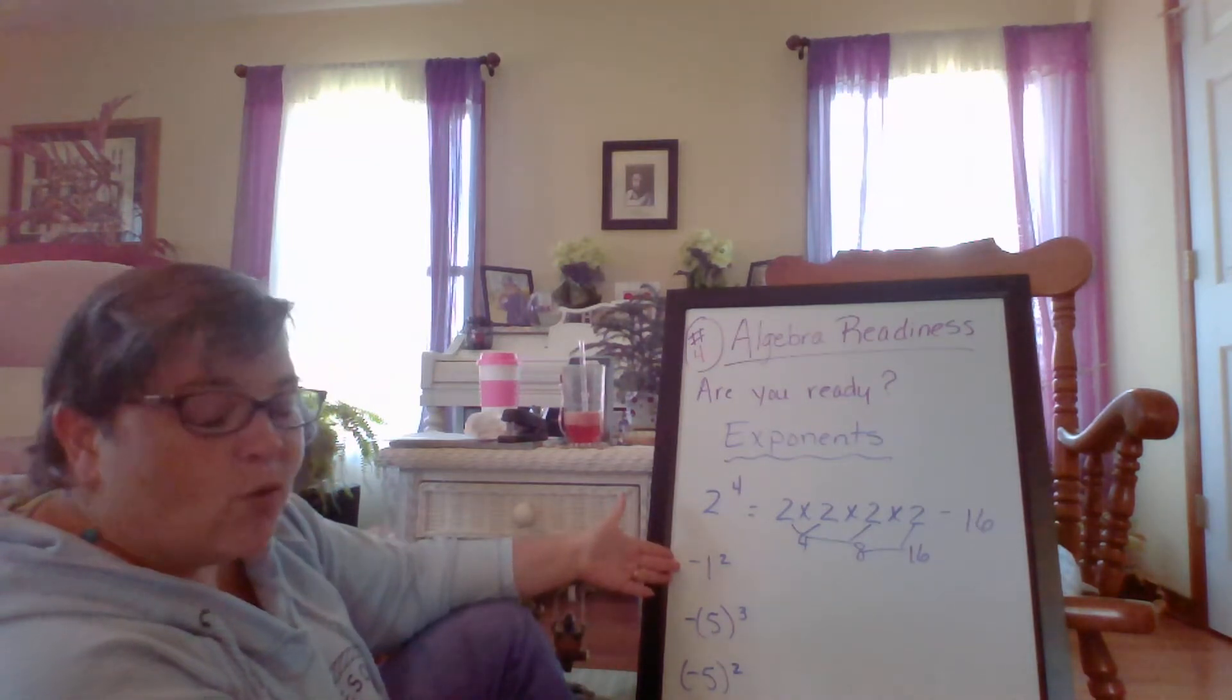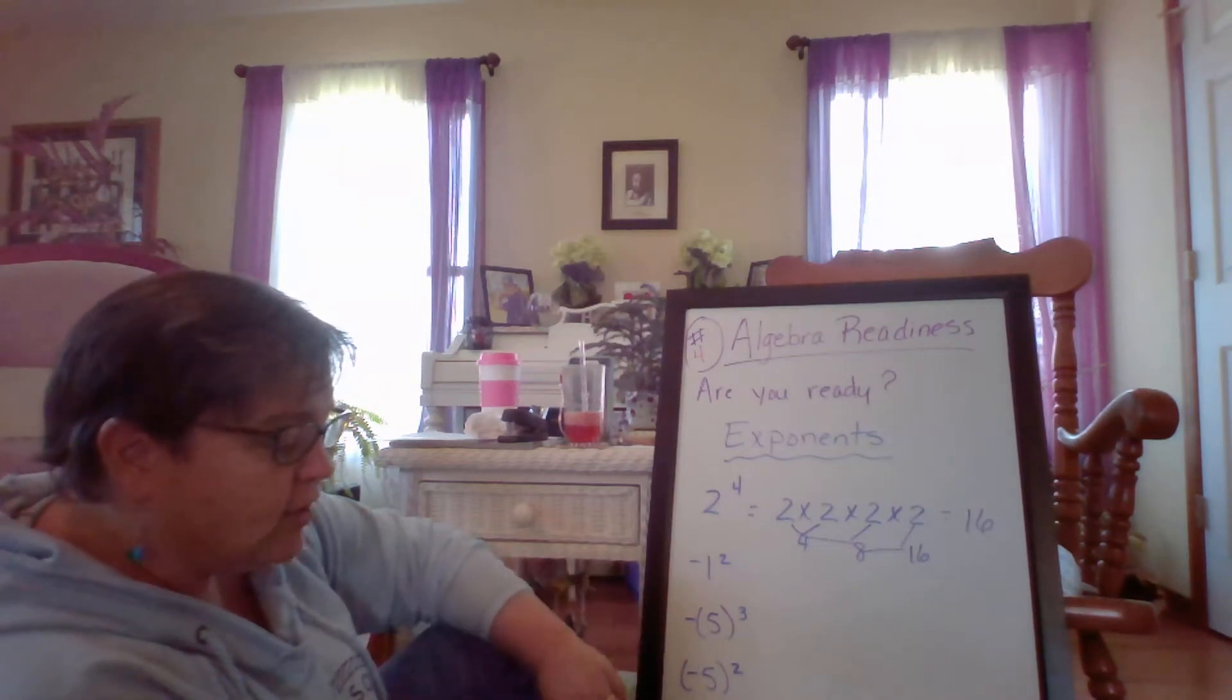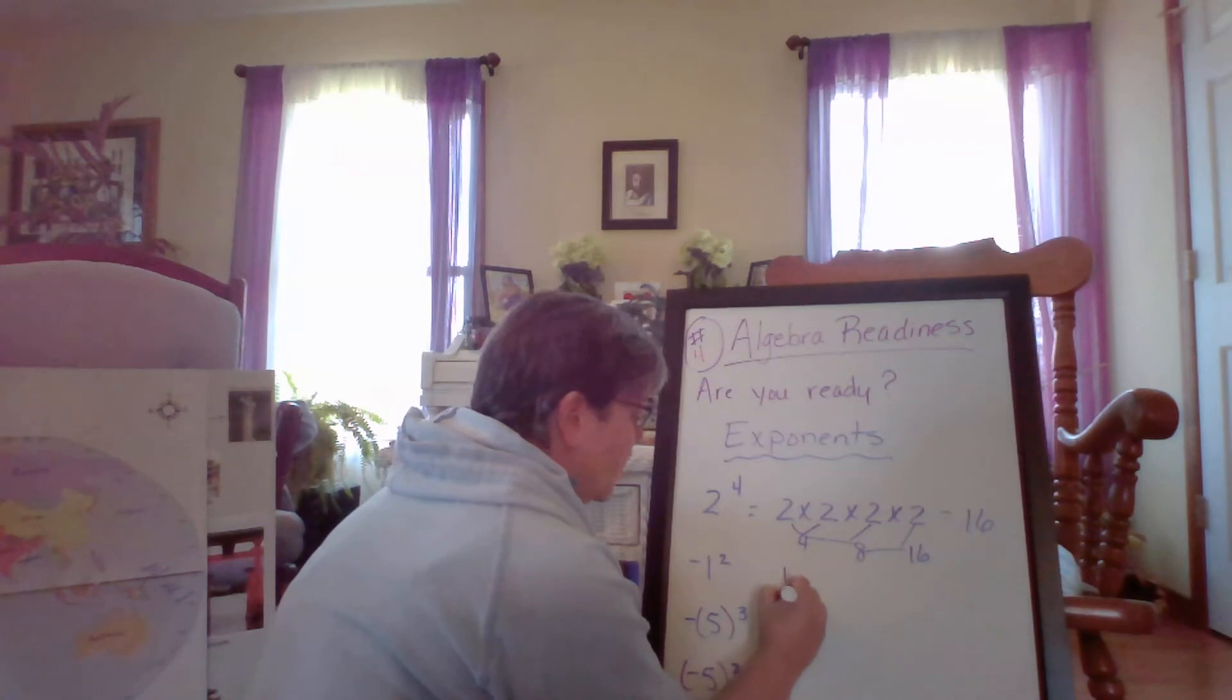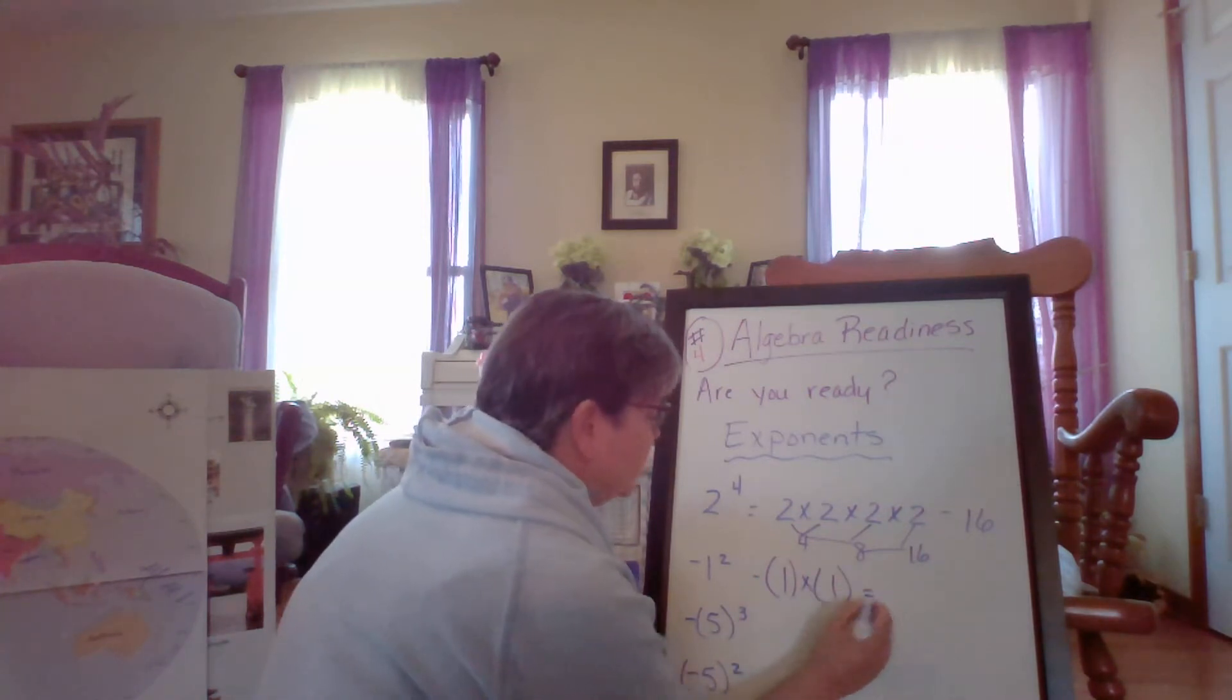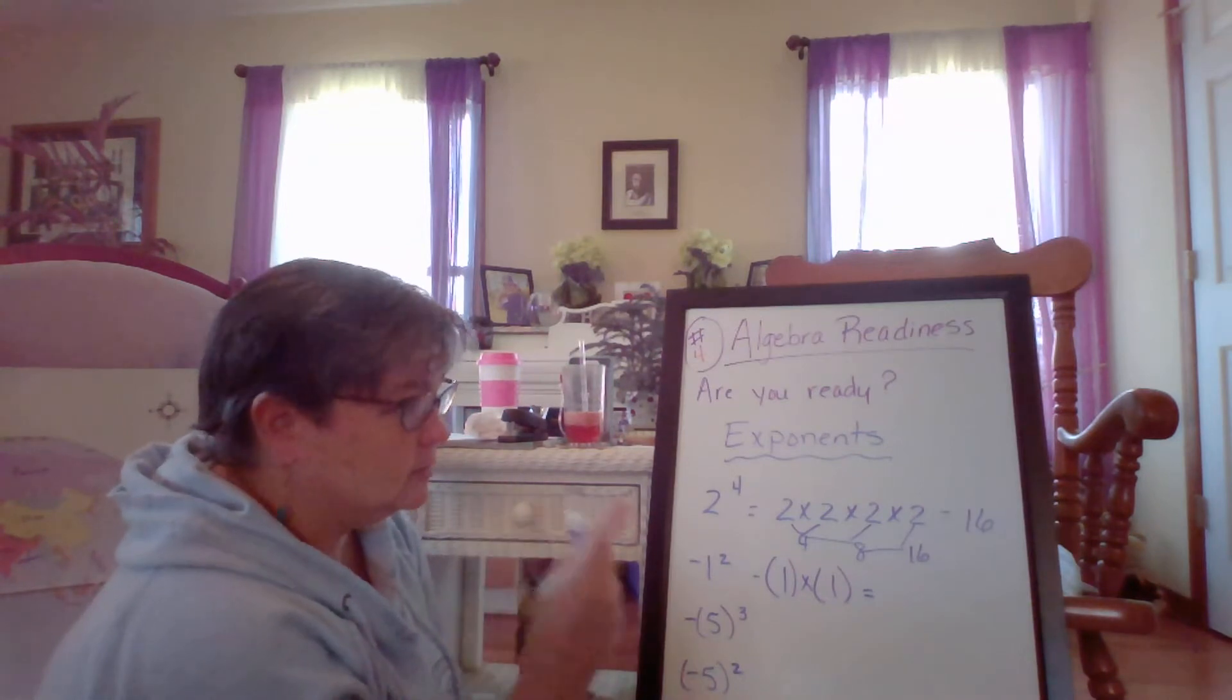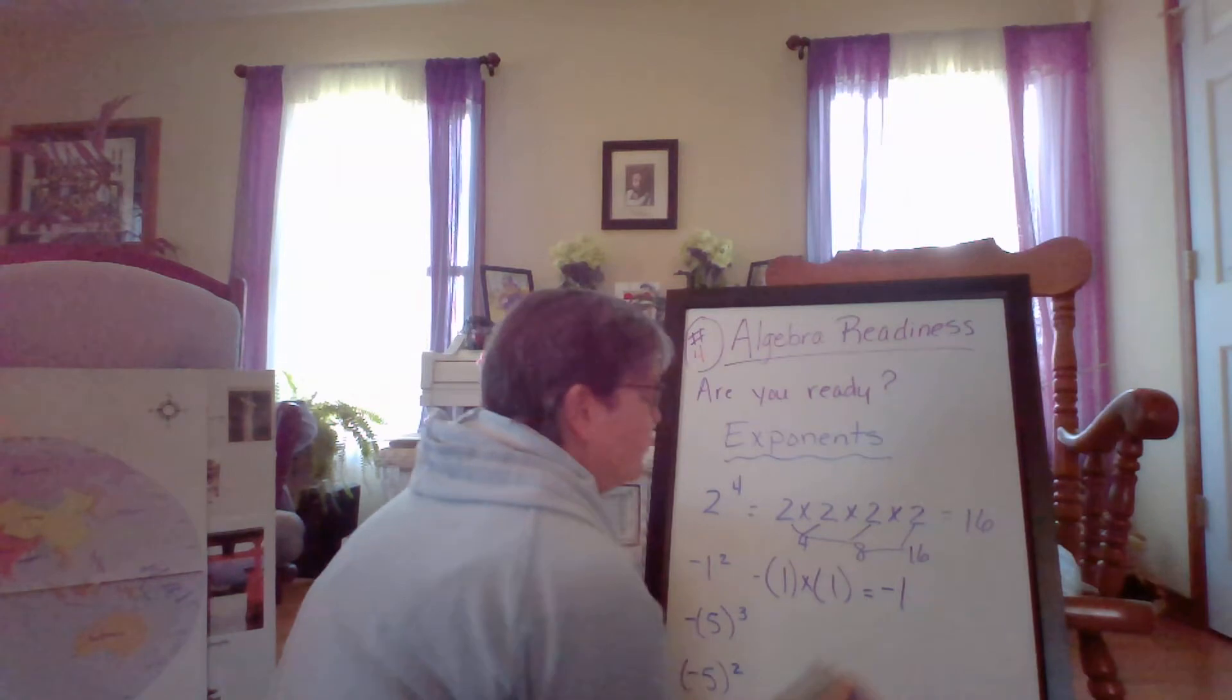So we have a negative one here, and we have to multiply that by itself. So this is negative one, excuse me, it's one times one. And then we have to bring that negative along. So this is one times one is one, and then we have the negative, we bring that along. So this is still negative one.